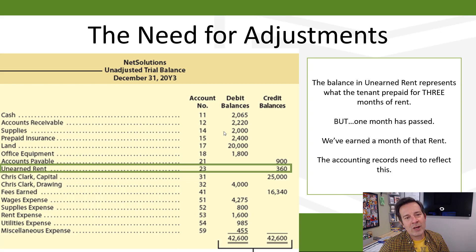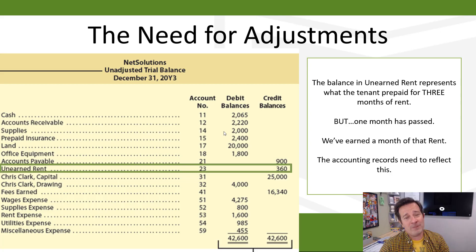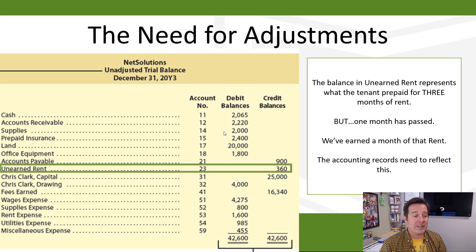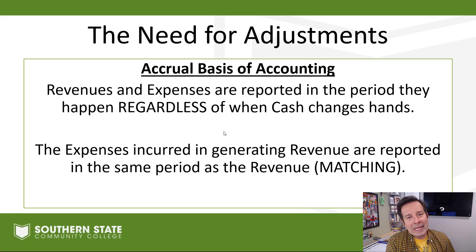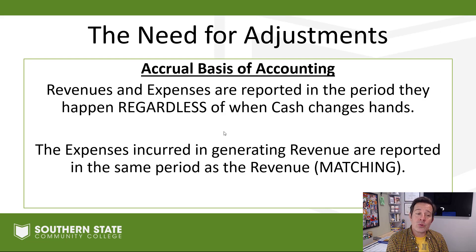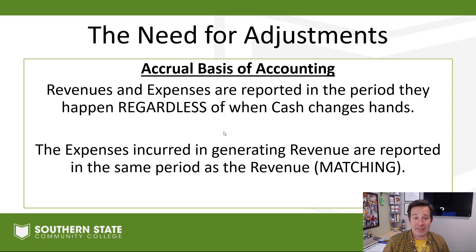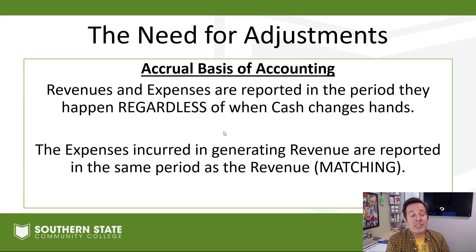Those are a few scenarios where the accounting records — even though we've done a great job, the accounting has been chef's kiss, it's been perfect — we still have to make adjustments at the end of the month to reflect reality. It all goes back to the accrual basis of accounting, which is what we use for GAAP. In accrual accounting, revenues and expenses are reported in the period they happen, regardless of whether or not money has traded hands. The expenses we incur in generating revenue are reported in the same period as the revenue generated. It's called matching — we're trying to match up the expenses with the revenue.